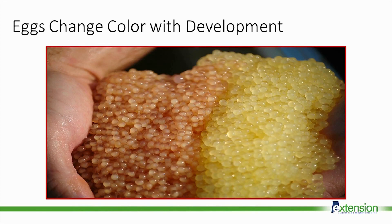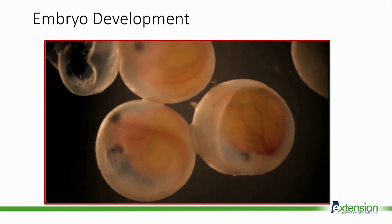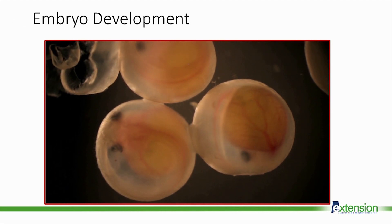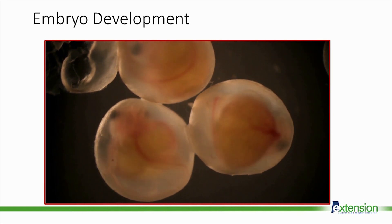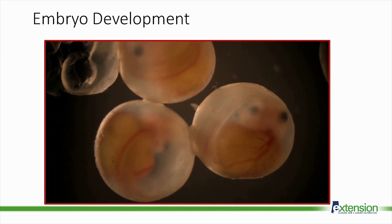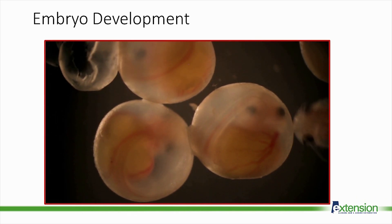As the eggs develop, they change from a light yellow color to a rusty red color. Inside the egg, the embryo develops until it's ready to hatch. When the eggs hatch, they have a large yolk sac attached that they can feed on for several days.